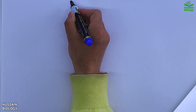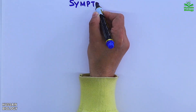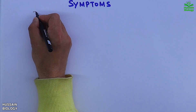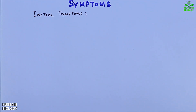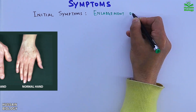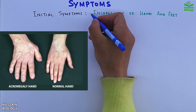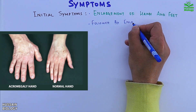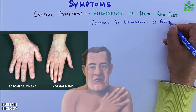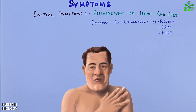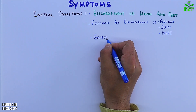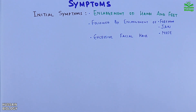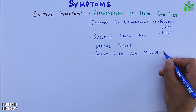The initial symptoms of acromegaly include enlargement of hands and feet, followed by enlargement of the forehead, jaw, and nose. There is also excessive facial hair, a deeper voice, joint pain, and muscle weakness.